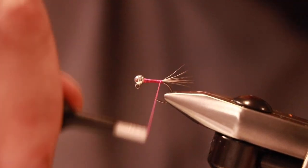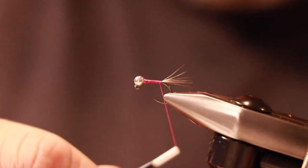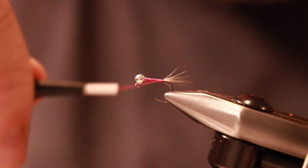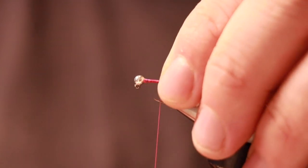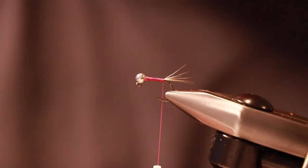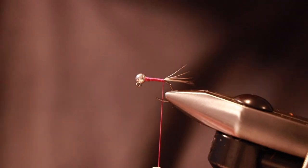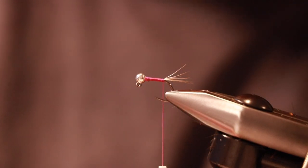These flies are really good for fast running water. Anywhere you want to try and get down quickly, because they have very little resistance. So you can afford to get a smaller size, a smaller bead, and get down as quick as you might with a bushier fly.